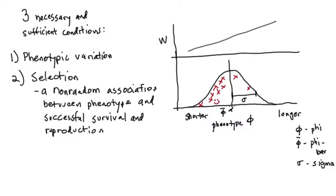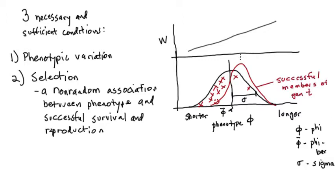If you look at only the survivors and successful reproducers out of the whole starting population, their average arm length would be bigger than the average arm length of the entire starting population. We draw the frequency distribution just for the survivors and reproducers — these are the successful members of generation T, the ones that will be the parents of generation T+1. Their average arm length is greater than the average for the whole of generation T before selection.